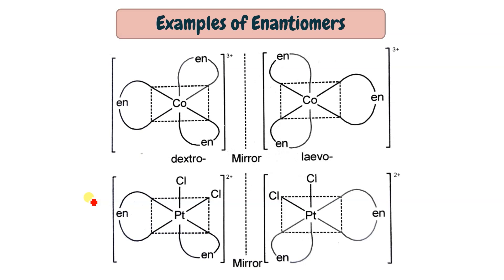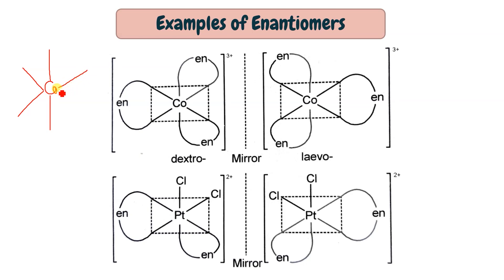When drawing optical isomers, always start by placing the bidentate ligand in the axial position. This gives a clearer picture. For example, if the bidentate ligand is moving in one direction from the axial position, you can clearly identify the structure.